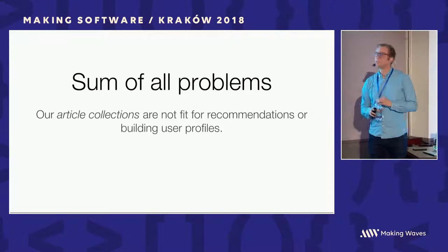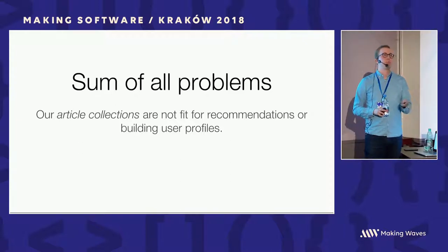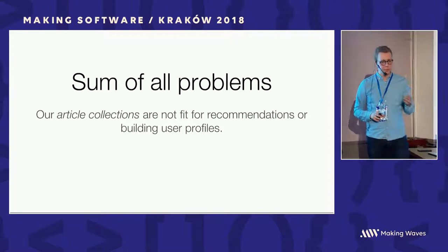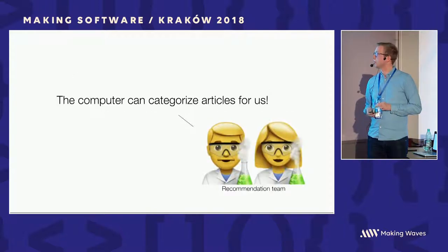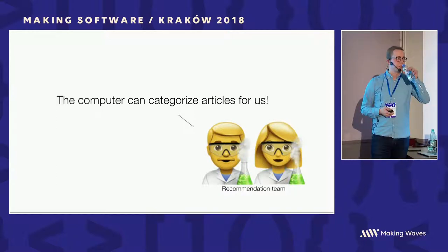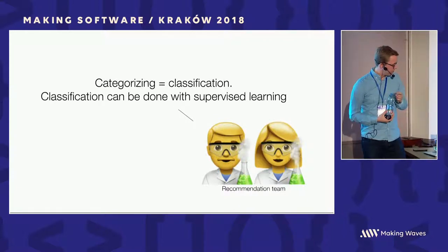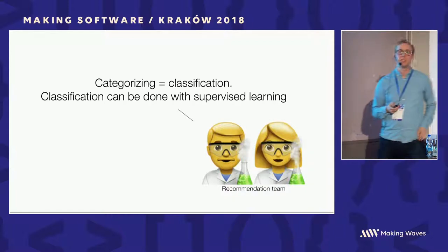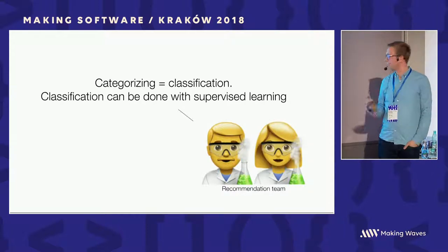One way to fix this would be to just fix those collections and use them in a better way. But then you'd have to tell 500 journalists how to do their job better and rewrite the CMS system. As I work as an engineer and data scientist, that's not the approach we took. We said: instead, the computer can categorize articles for us.